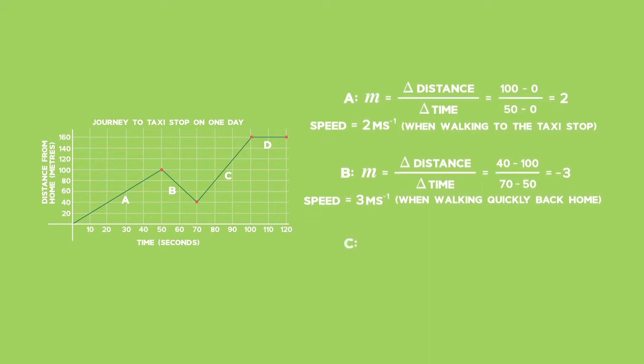Section C: Gradient M equals the change in distance over the change in time, which equals 160 minus 40 over 100 minus 70, which is 4. Ivan's speed is 4 meters per second when he runs to the taxi stop.